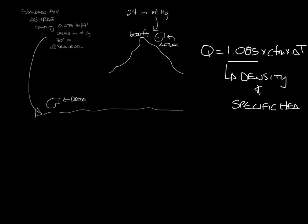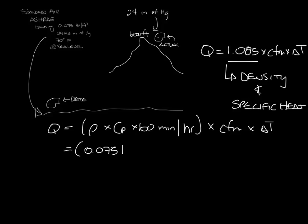So the load equation actually looks like this. Q equals the density times the specific heat times the conversion of minutes per hour, so 60 minutes per hour, times CFM times delta T. So for standard air, this equals 0.075 pounds per cubic feet times 0.241 BTU per pound per degree Fahrenheit times the 60 times CFM times delta T.